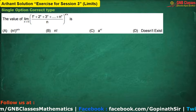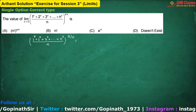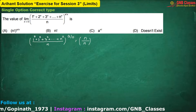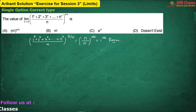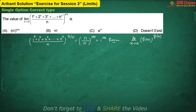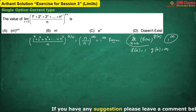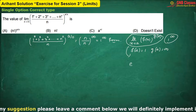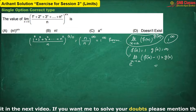In this question, if I put the limiting value, we get one to the power infinity form. Now if the form is one to the power infinity — the theory is: if limit x tends to a of f(x) to the power g(x), and putting the limiting value gives f(a) as one and g(a) as infinity, then we can write this limit directly as e to the power of: limit x tends to a of (f(x) minus 1) times g(x). This is also called the power limit formula.